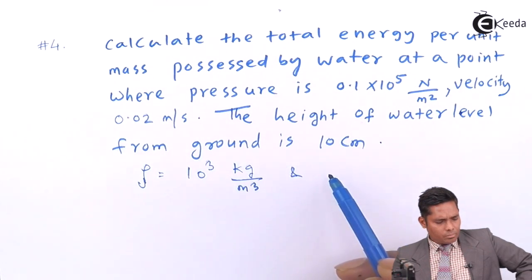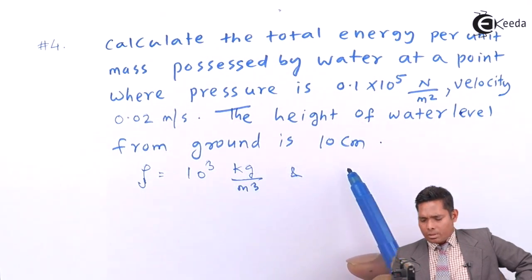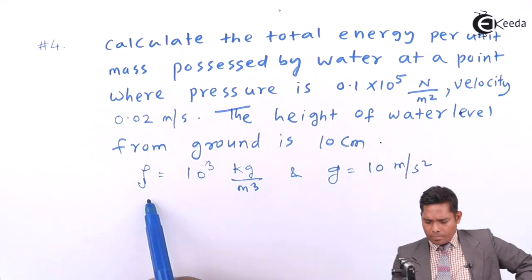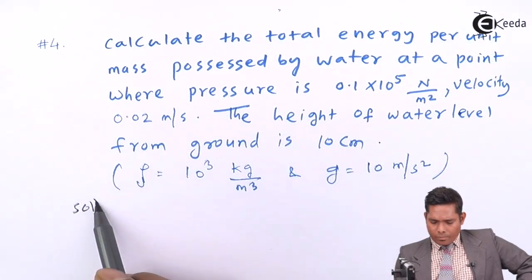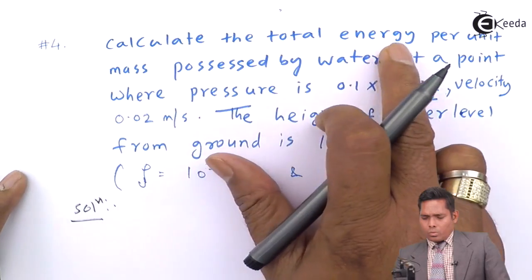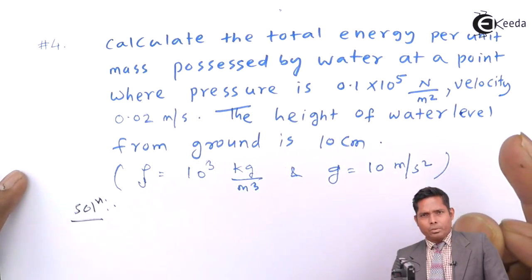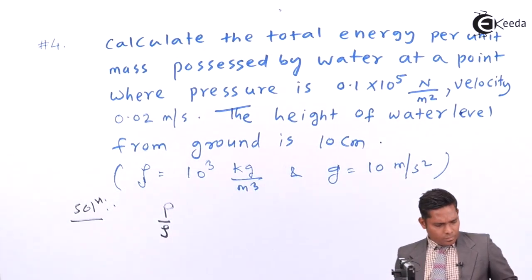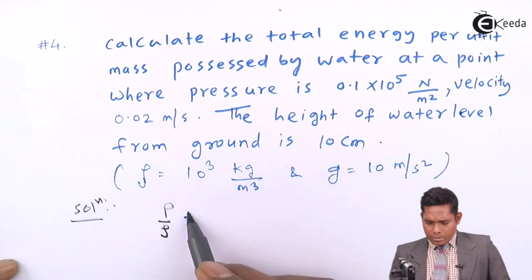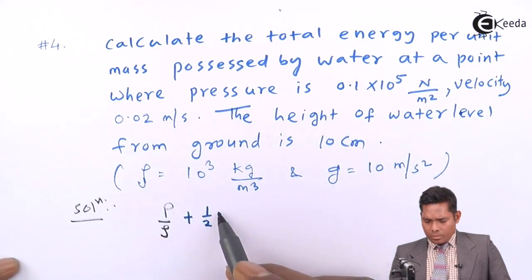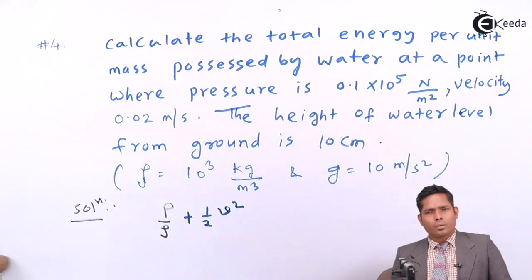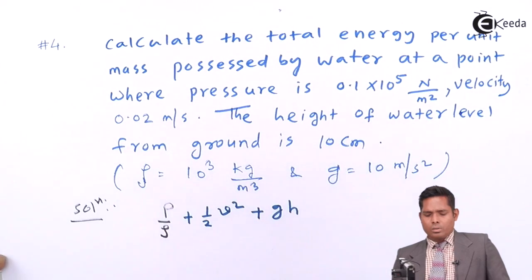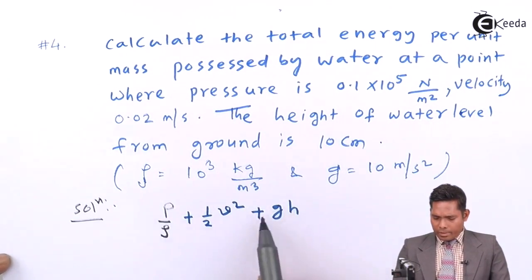We take g as 10 meters per second square. The total energy per unit mass formula is: P divided by rho, plus half v squared, plus g times h. You add all three terms to get the answer, taking into account pressure, velocity, and height.